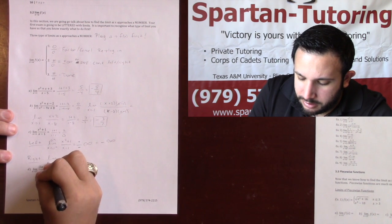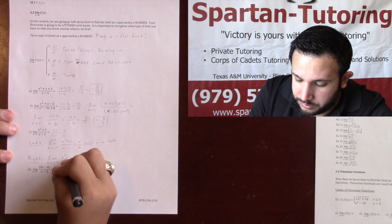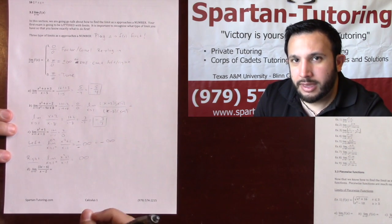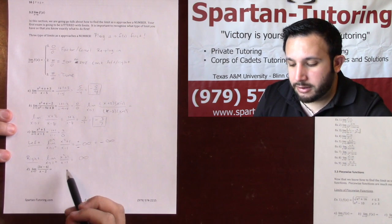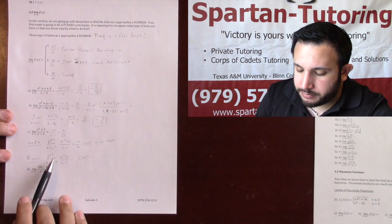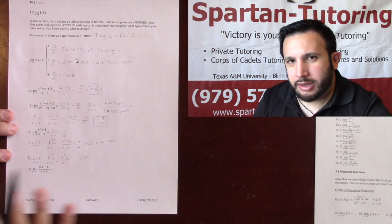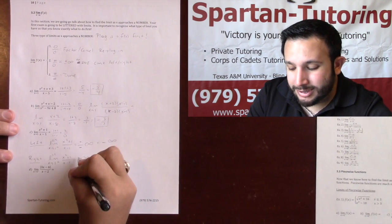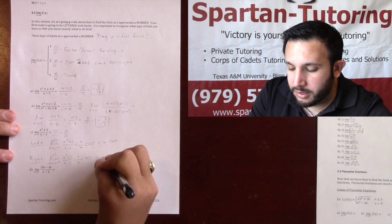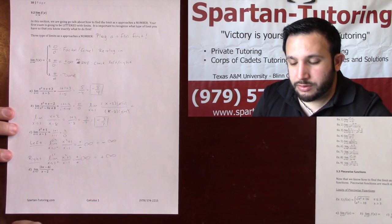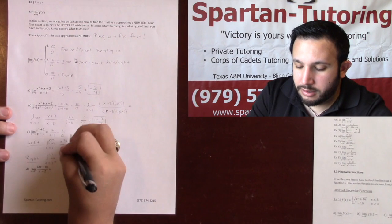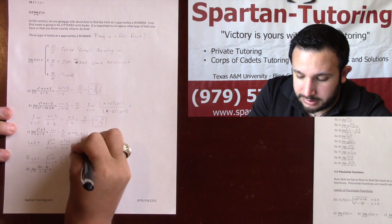Now let's check the right side: the limit as x approaches 1 from the right of (x² + 1)/(x − 1). Again, since it's a vertical asymptote, it's going to infinity — I just need to determine the sign. I pick 1.1: 1.1 squared plus one is definitely positive, and 1.1 minus one is definitely positive. Positive divided by positive is positive infinity. Since the limit from the left is negative infinity and from the right is positive infinity, this limit does not exist.